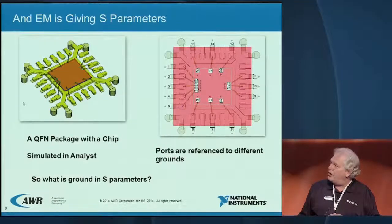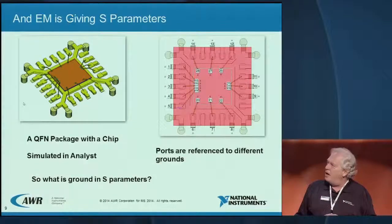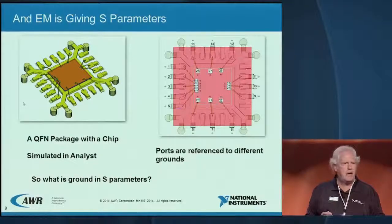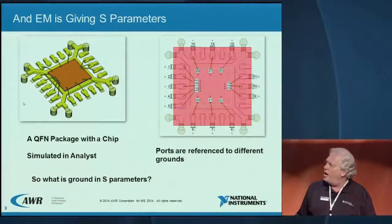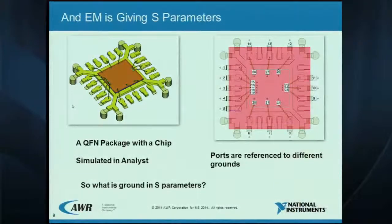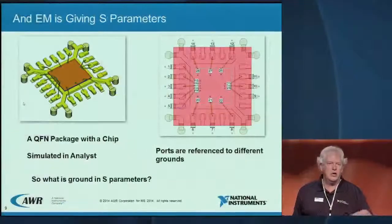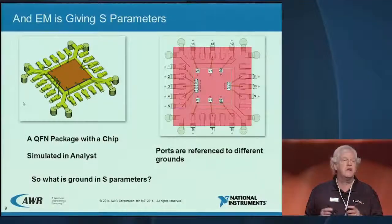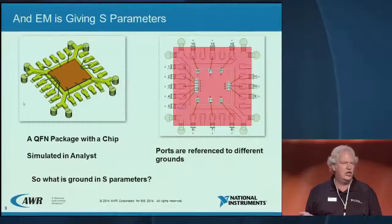Here are a couple of quick examples. This is our Analyst 3D product showing a QFN — quad flat pack no-lead — package. The point I want to make is that the ports have little ground symbols. That ground is on the bottom of the chip for some ports, and on the bottom ground plane that the QFN is attaching to for others. Those are different grounds in the same simulation. Can you do that? Does it make sense? How do you put it into the circuit simulator?